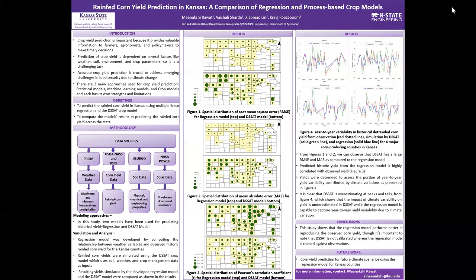Hi, everyone. I am Meenakshi Rawat. I am a master's student in biological and agriculture engineering at Kansas State University. My presentation is on rain-fed corn yield prediction in Kansas, a comparison of regression and process-based model.